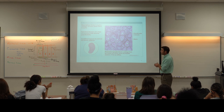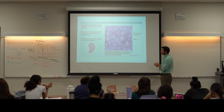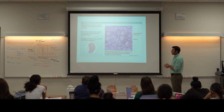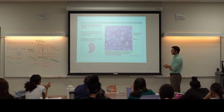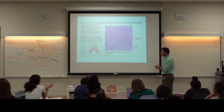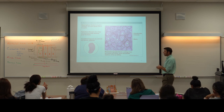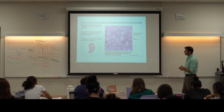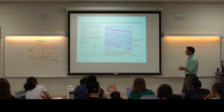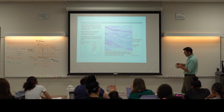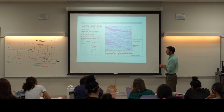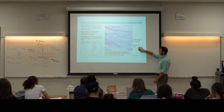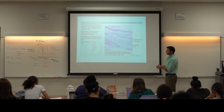Elastic cartilage also shows the big open lacunae with chondrocytes, but now the matrix between those chondrocytes has elastic fibers running through it — versus hyaline cartilage which has no fibers in the matrix. In fibrocartilage, we can still see chondrocytes inside their lacunae, but there is an abundant amount of collagen fibers — and it's really the abundance of collagen fibers that gives fibrocartilage its strength and ability to support compression and body weight.